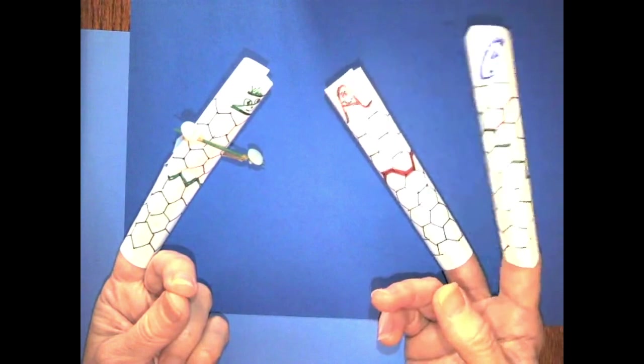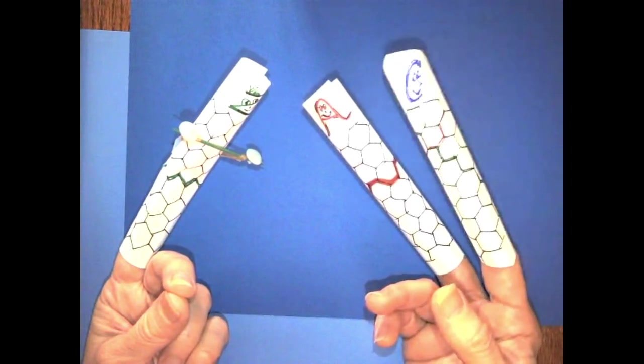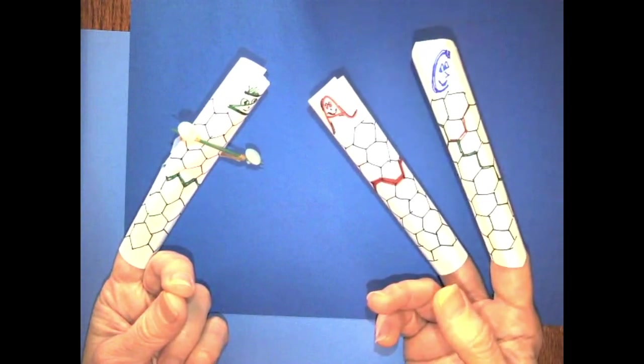Carbon nanotubes are long and skinny like a piece of hair, but even smaller. They're super strong when you pull on them, but they bend and buckle pretty easily. That doesn't sound very useful.